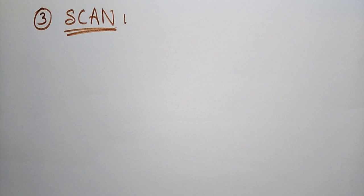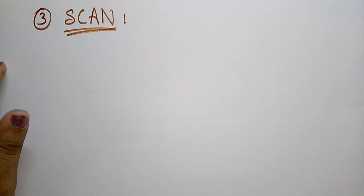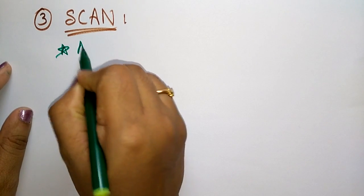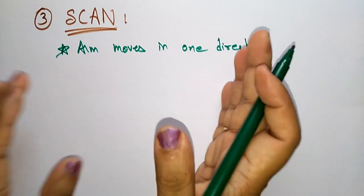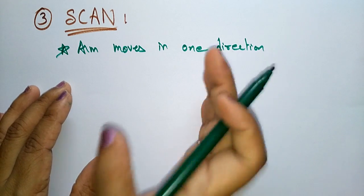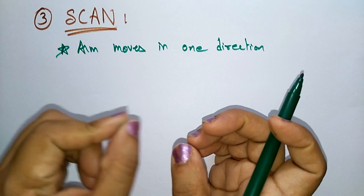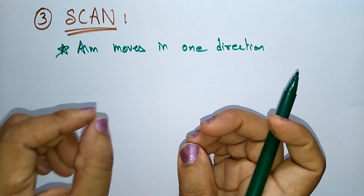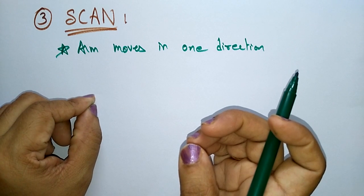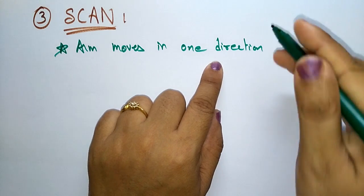Let us continue with the disc scheduling algorithm. So far we have discussed first come first serve and the second one, shortest seek time first. Now coming to the third scheduling algorithm, that is SCAN. In SCAN, the arm moves in one direction only. In FCFS, the first request that comes has to be served first. In SSTF, the track with the shortest seek time from the current arm position is visited first.